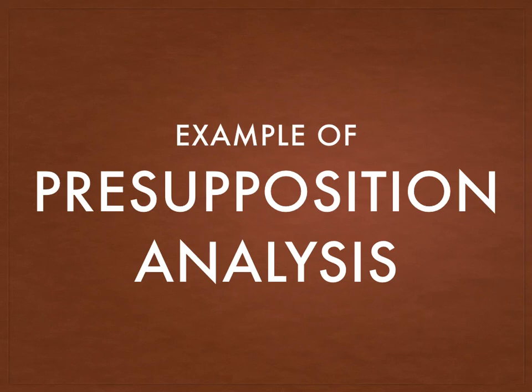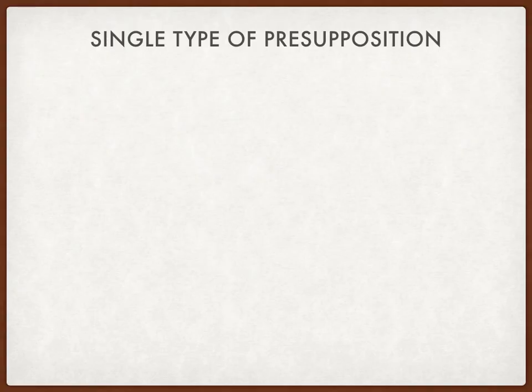Hello friends, in this opportunity I'd like to share an example of presupposition analysis. The first type is the single type of presupposition, which means that in one sentence you may find only one type of presupposition.